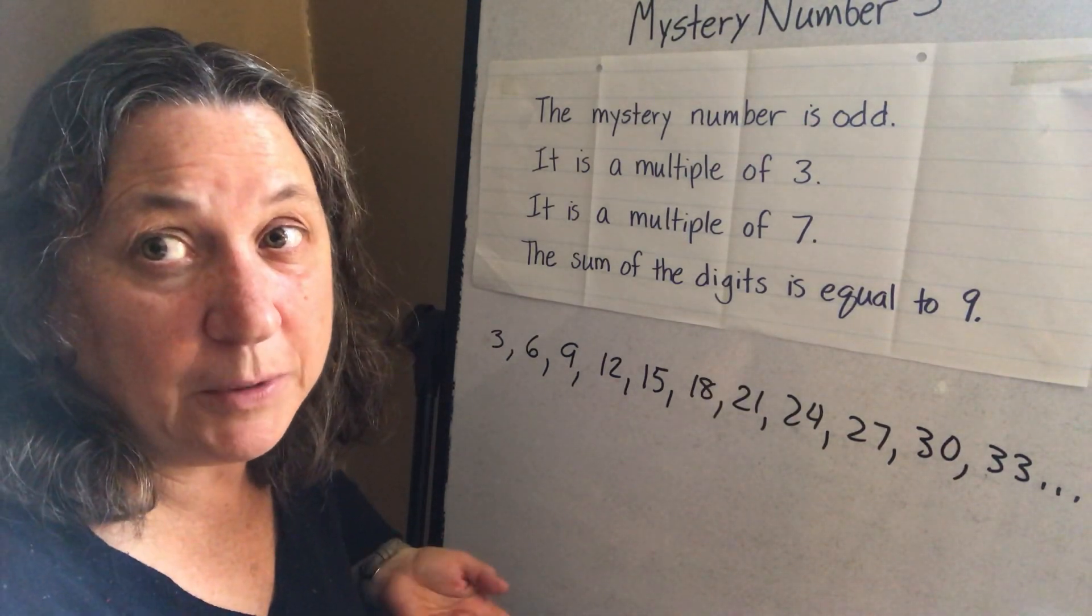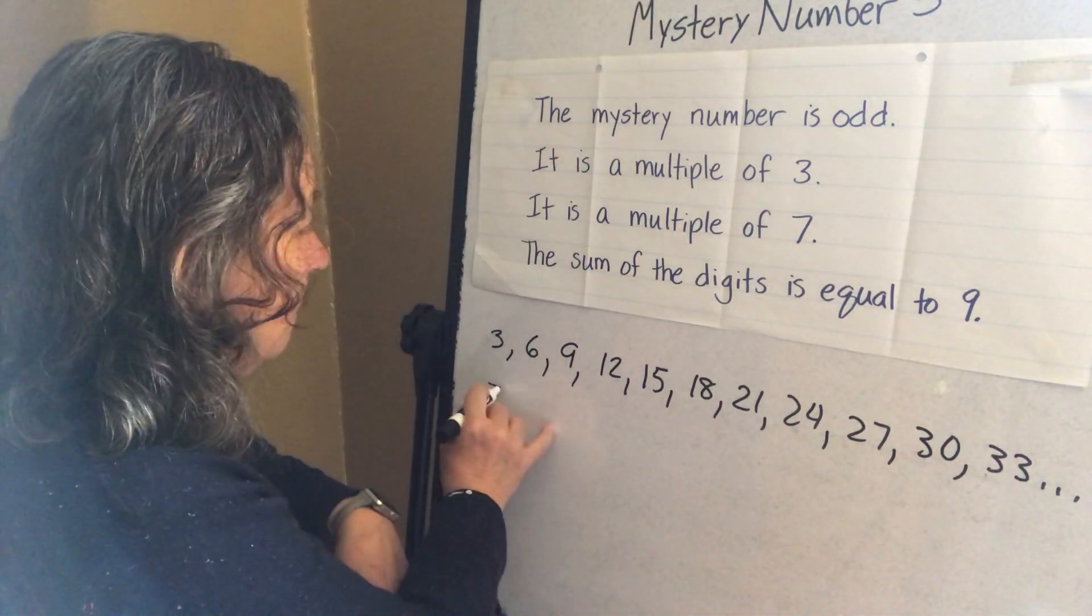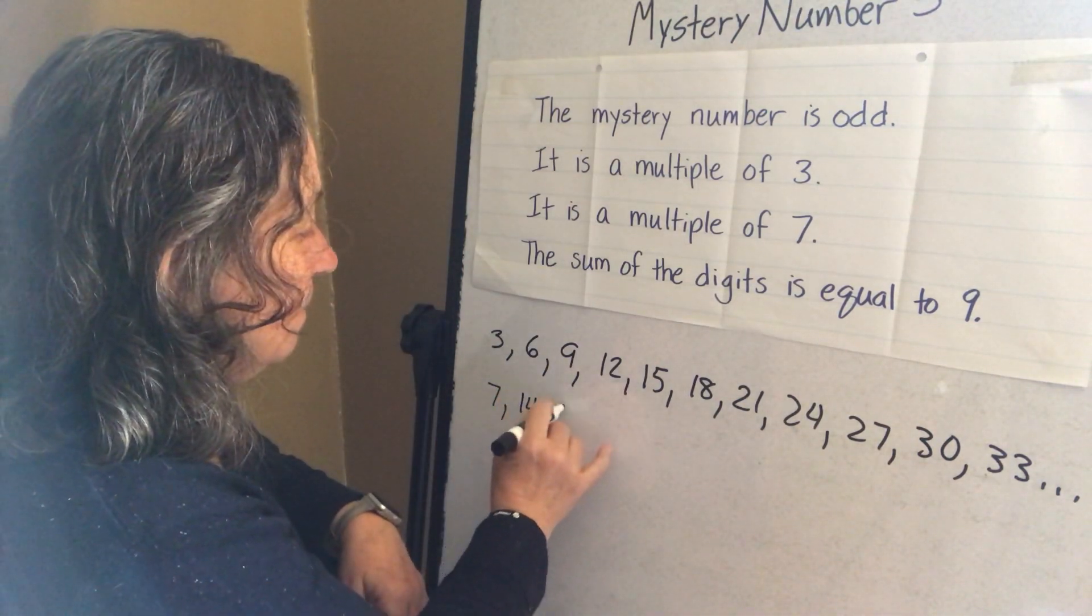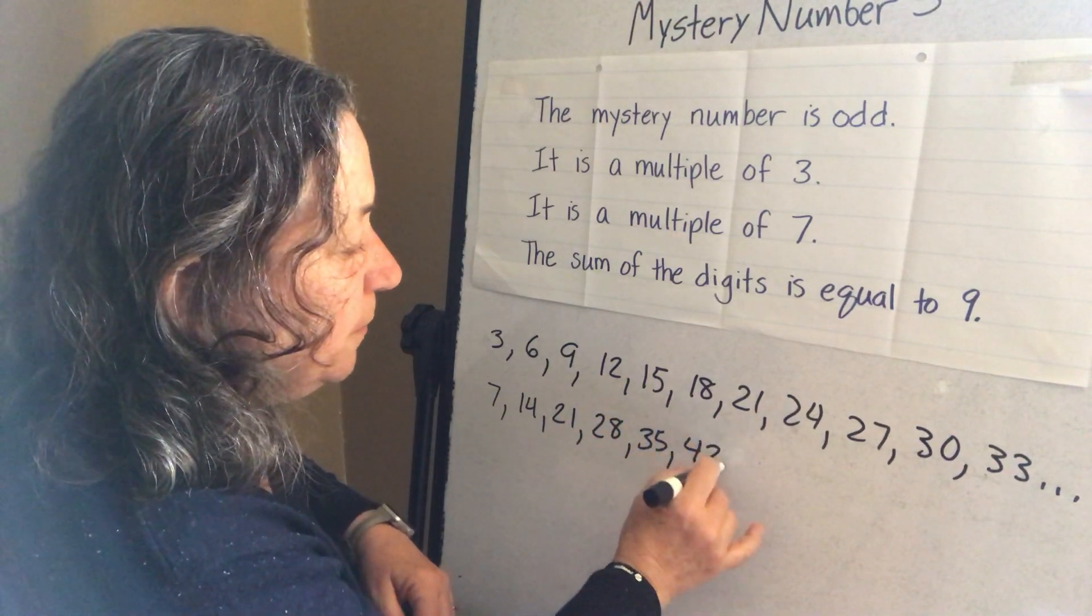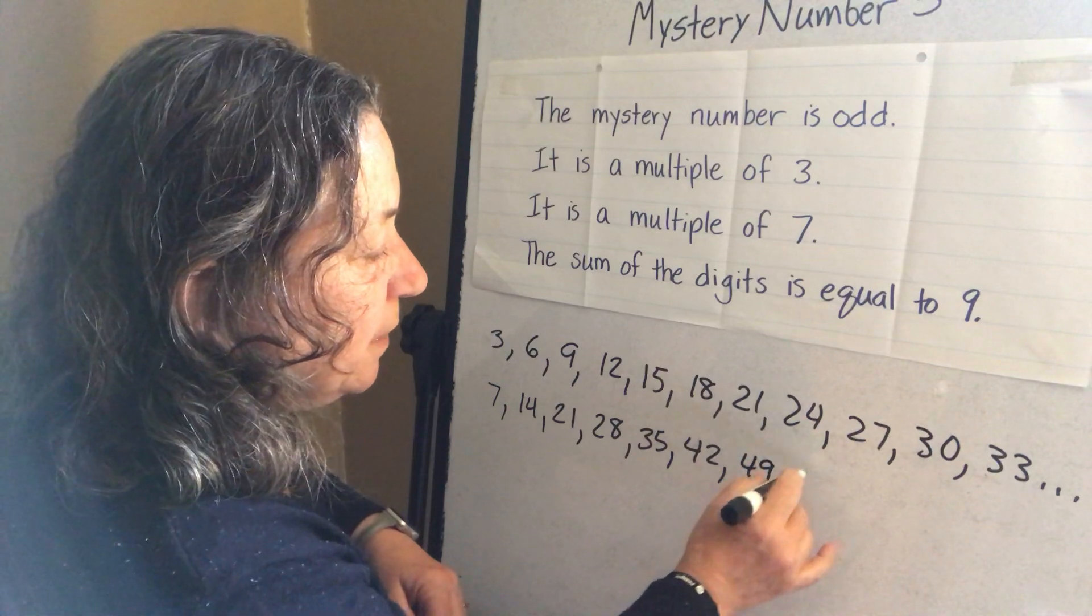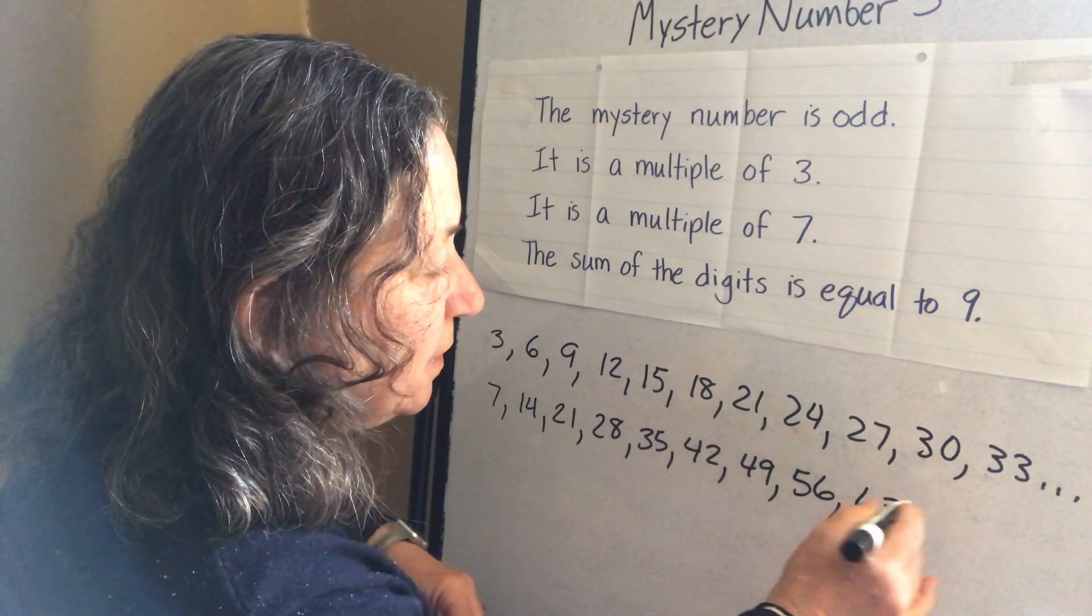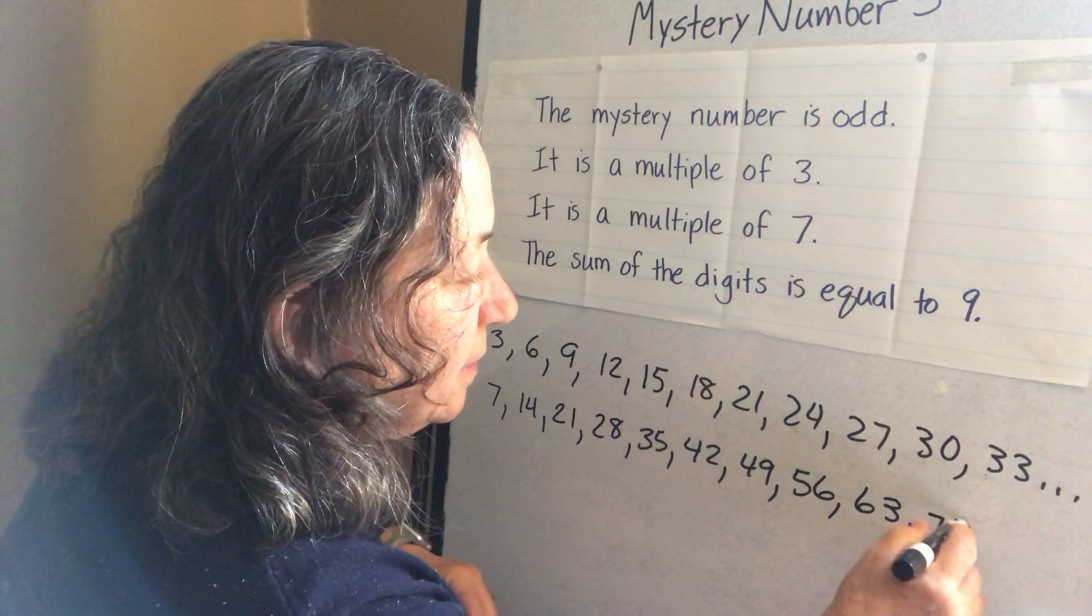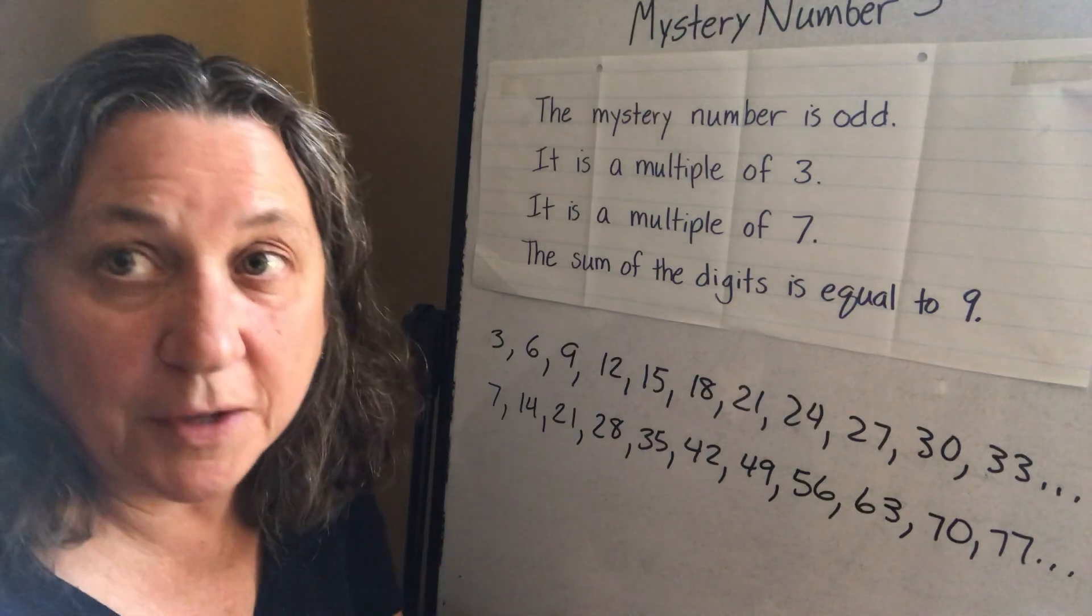The next clue is I am a multiple of seven so let's write some multiples of seven. 35, 42, 49, 56, 63, 70, 77 and stop knowing that they go on forever.